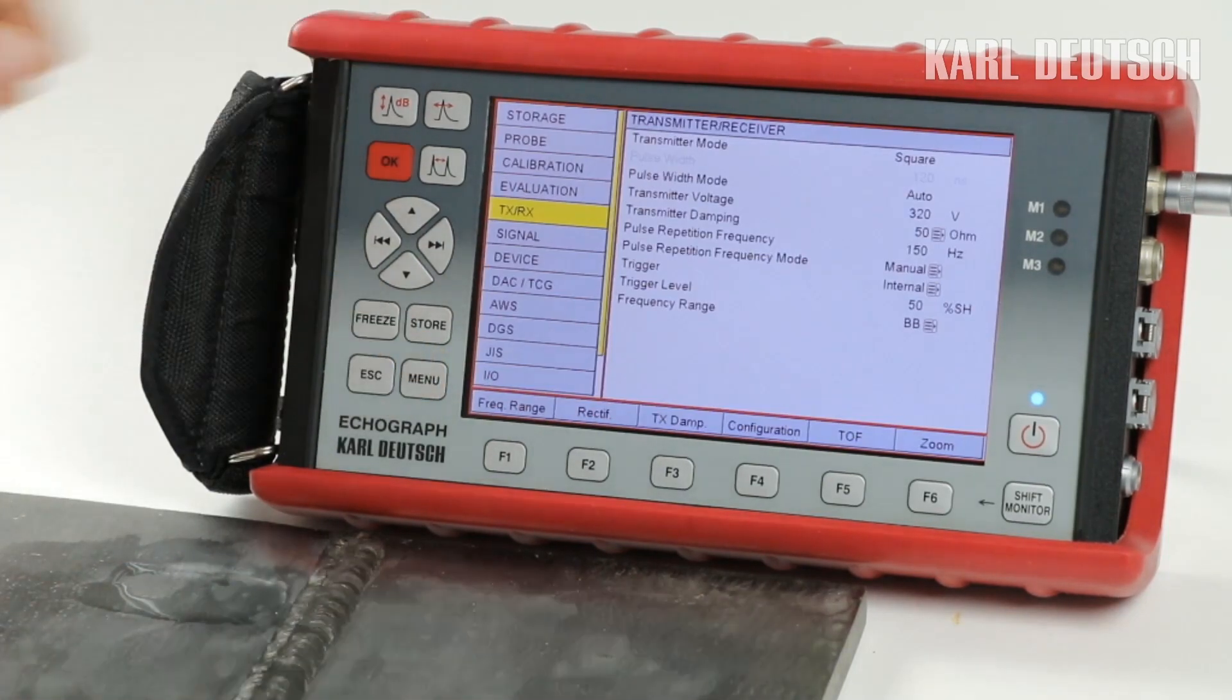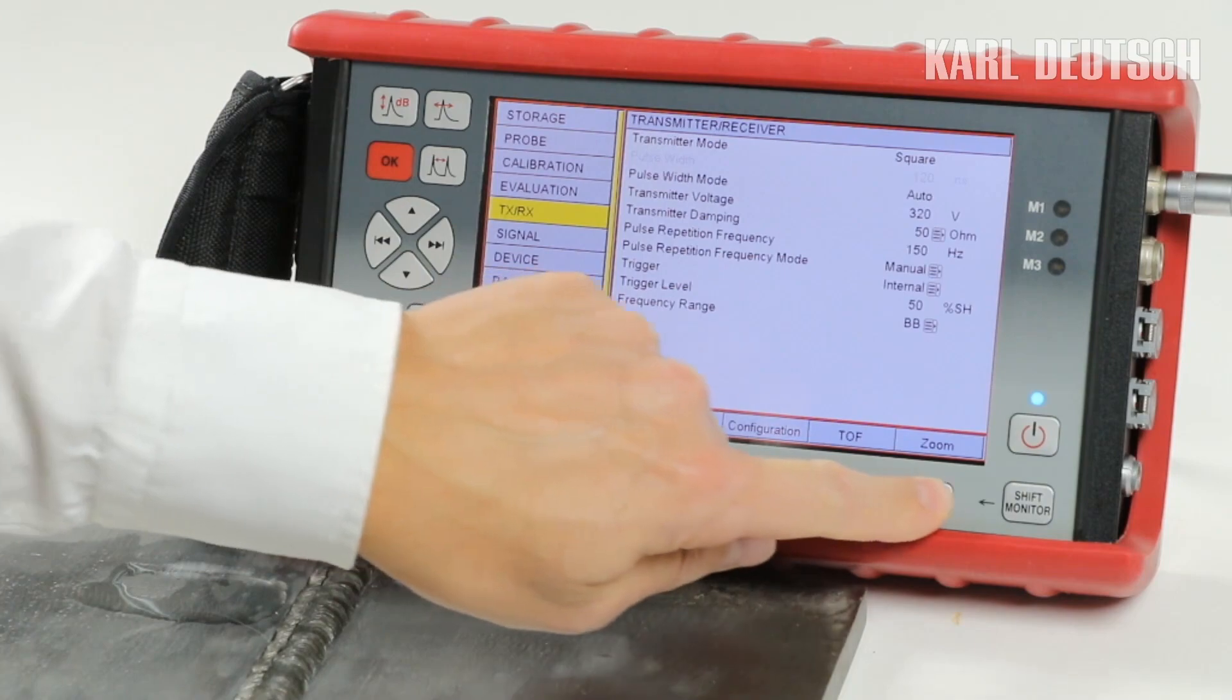The plain text menu is self-explanatory and gives you direct access to all essential device functions. The functions that you need frequently or whose effects on the A-scan you would like to observe directly can be set on the six freely assignable function keys.